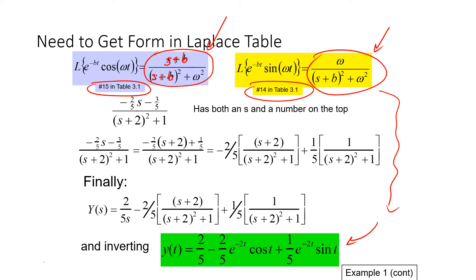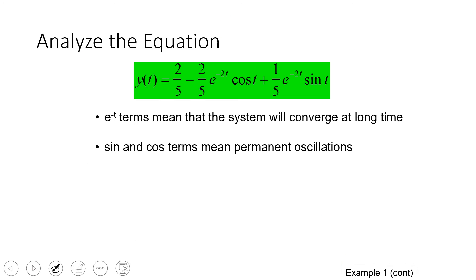Eventually we get back to the time domain expression. You can see it's going to oscillate because of the sine and cosine terms, but it's also going to converge because of the exponential decay. So it will oscillate and eventually steady out at a final value of two-fifths.